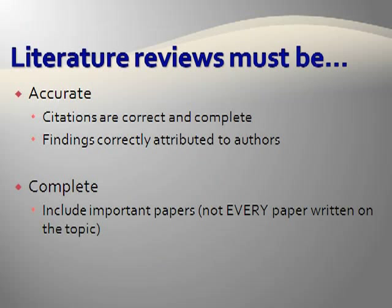As guides to the literature, review articles should be accurate and complete. Citations need to be correct and complete. Can you imagine the reader's frustration if they can't find a source that is mentioned in a literature review article? It also raises questions of credibility. Was this author sloppy with other parts of the review? Can the author be trusted? Authors need to be properly cited, again for the same reasons of credibility. Besides, you do not want to annoy an author because you didn't correctly attribute their work to them.